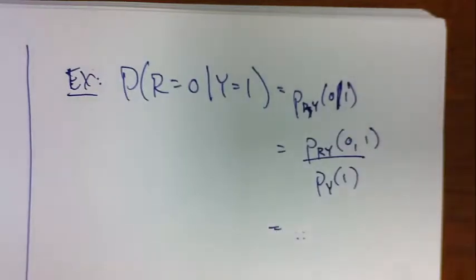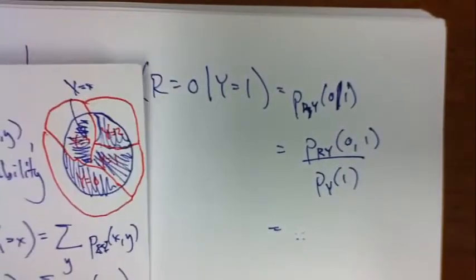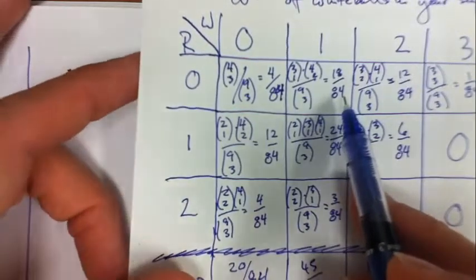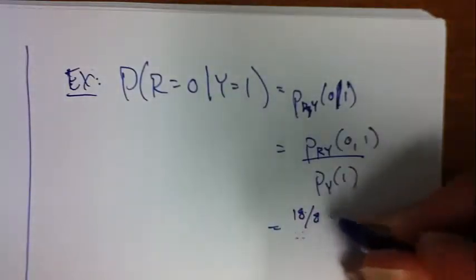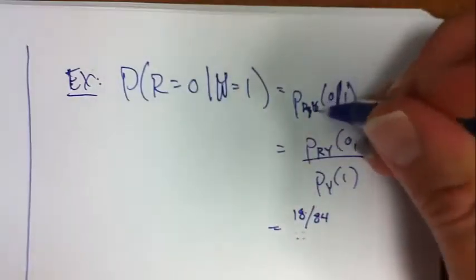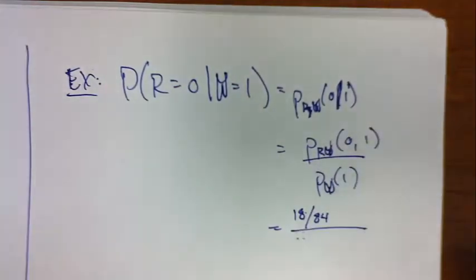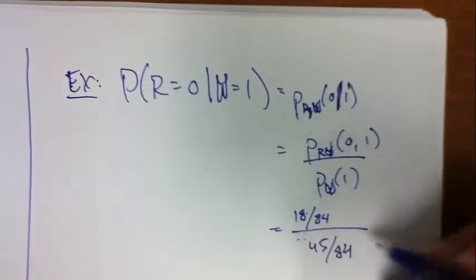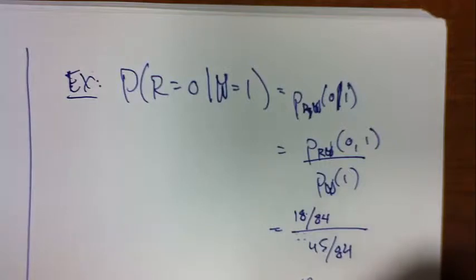This is over the p sub y of 1. Probability that the red is 0 and yellow is 1, red is 0, yellow is 1, 18 out of 84. By yellow, I mean white. 18 out of 84. We should change this to white. What's the probability that the white is 1? I have to look at the marginal. It's 45 out of 84. So that just turns out to be 18 out of 45, or two-fifths.